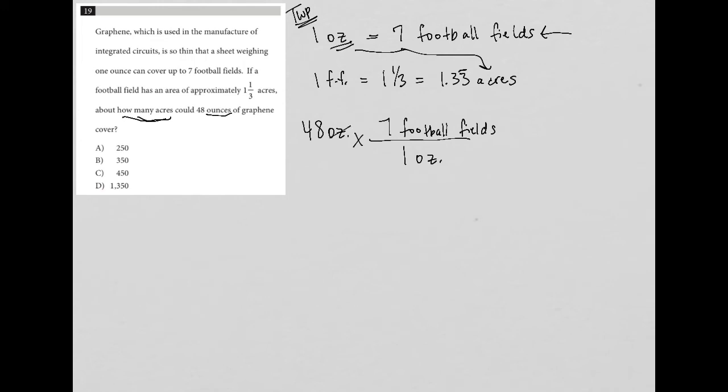Now, that gets rid of my ounce unit. But then it leaves me with football fields as a unit. I don't want football fields as a unit. I want acres as a unit. So that's where this next line comes in. Because I know that one football field, and again I'll just use FF for space, is equal to 1.33 with a bar, acres.